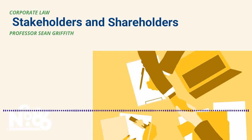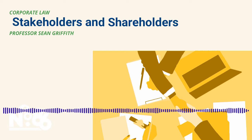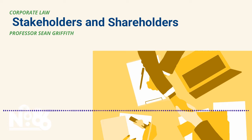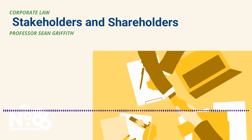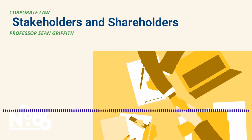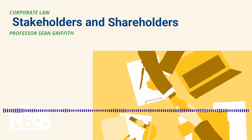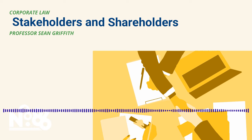Agency, per the Restatement of Agency, is the fiduciary relationship that arises from the manifestation of consent from a principal to an agent, that the agent will act on the principal's behalf and subject to the principal's control, and that the agent consents to act in that way. What agency really is about is what all business associations law is about — who decides and on what basis. The word 'control' in that definition is pivotal. How broad is the agency relationship? How many things is the agent authorized to do in furtherance of the principal's objectives, and how far is too far?